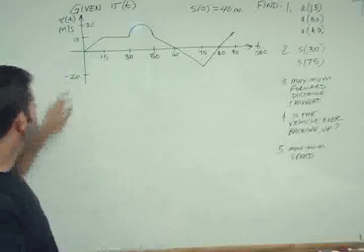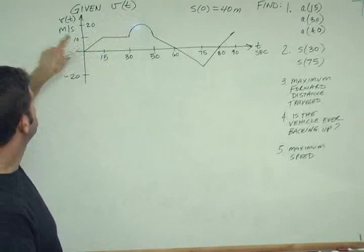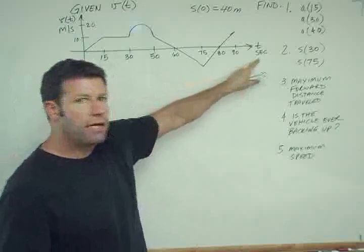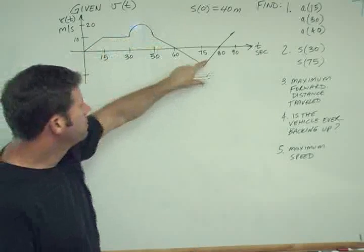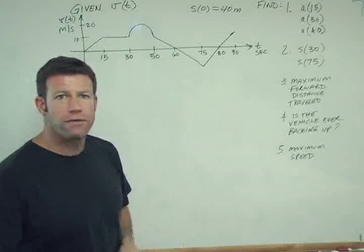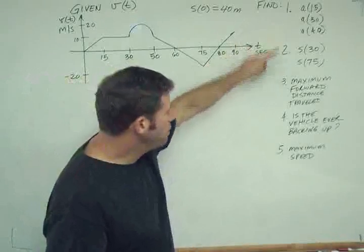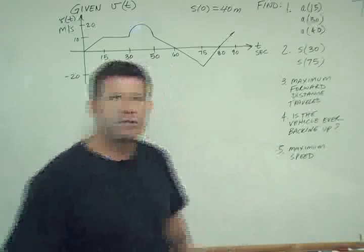And we're given here the problem statement: velocity is a function of time, velocity is in meters per second, time is in seconds, and what we're given is this graph which shows this kind of interesting profile of how velocity varies, and then we're asked to find a bunch of different things, accelerations at certain times, distances, etc. So we'll go through these one by one.